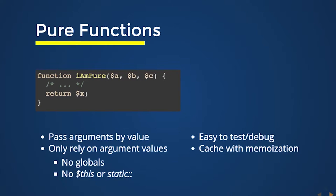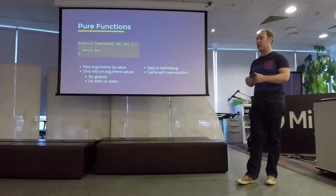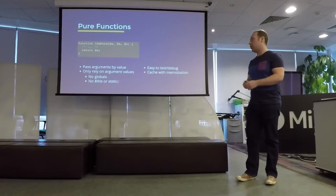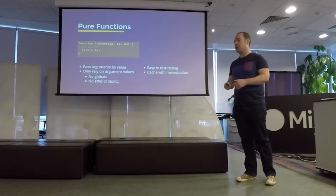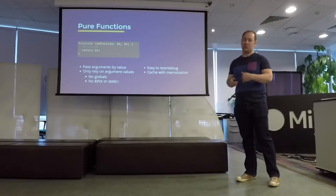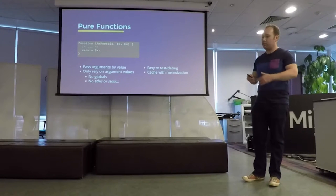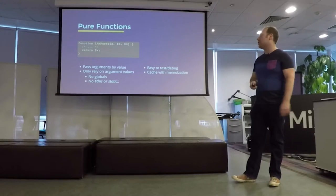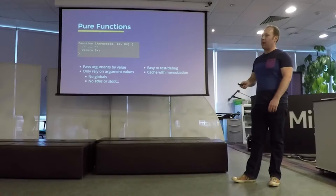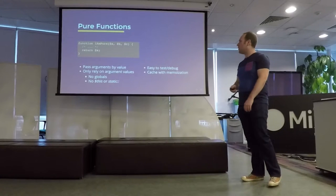It's also really easy to cache these kinds of methods, because it essentially means that if you've got any set of arguments, whenever the values of those arguments are the same, you can just cache that result and return it without actually having to invoke the logic within the function. So that's also desirable because caching is hard.